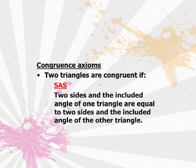The next case, we called side-angle-side. We said that two triangles are congruent if two sides and the included angle of one triangle are equal to two sides and the included angle of the other triangle.